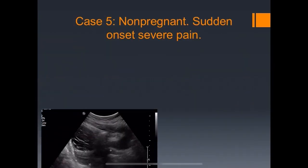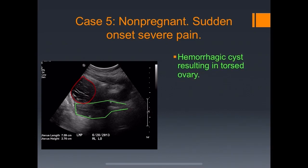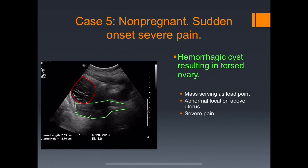Case five: non-pregnant with sudden onset of pain. Transabdominal view shows an anteverted uterus with a structure anteriorly in an abnormal location. This is a hemorrhagic cyst serving as a lead point resulting in a torsed ovary. Abnormal location above the uterus, severe pain, and no flow was seen in this case. Again, a reminder: an arterial waveform in an ovary does not exclude the diagnosis of torsion.